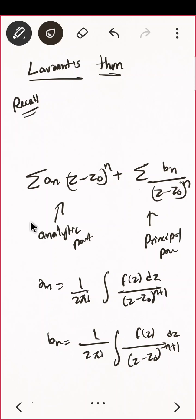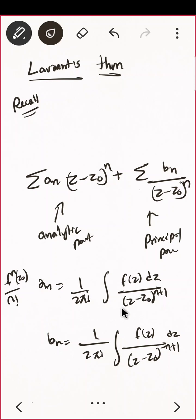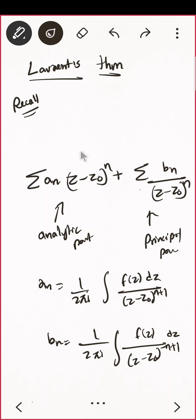What are aₙ and bₙ? They are related to the nth derivative divided by n factorial, just as in power series — f's nth derivative at z₀ divided by n factorial. Using the extended Cauchy integral formula, you relate with the nth derivative. This is just an application of that, and so this is your Laurent series expansion.